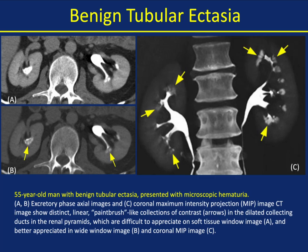Benign tubular ectasia in a patient with microscopic hematuria: the excretory phase images in axial and coronal and MIP images show distinct linear paintbrush-like collections of contrast in the dilated collecting ducts in the renal pyramids. These are difficult to appreciate on soft tissue window imaging but better appreciated on wide window imaging and on the MIP. Think about this benign tubular ectasia with that paintbrush appearance compared to the normal subtle blush.